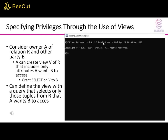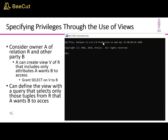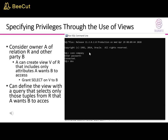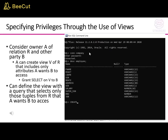Regarding specifying privileges through the use of views: consider owner A of relation R and another party B. A can create a view V of R that includes only the attributes A wants B to access, then GRANT SELECT ON V TO B. A can also define the view with a query that selects only those tuples from R that A wants B to access. An example SQL command in Oracle for creating a view with specific attributes and granting the view to a user Tom is shown.